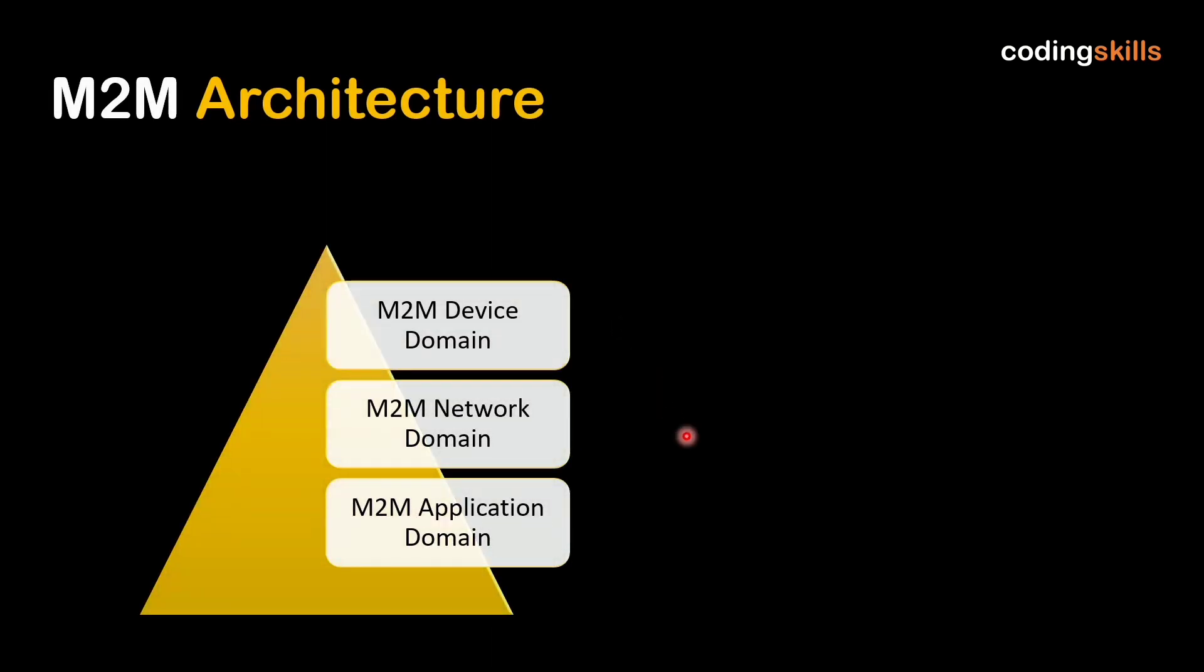The M2M architecture consists of three domains: M2M device domain, M2M network domain, and M2M application domain.